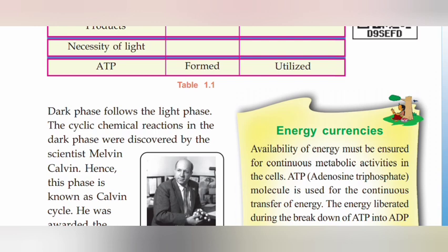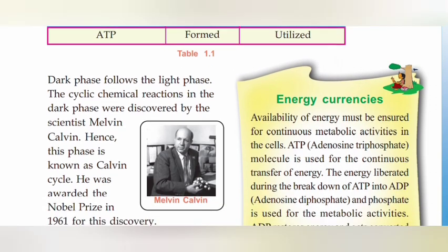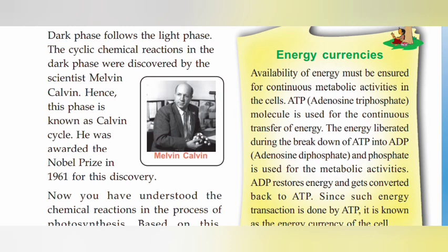The dark phase follows the light phase. The cyclic chemical reactions in the dark phase were discovered by scientist Melvin Calvin. He was awarded the Nobel Prize in 1961 for this discovery. Hence, this phase is known as the Calvin Cycle.